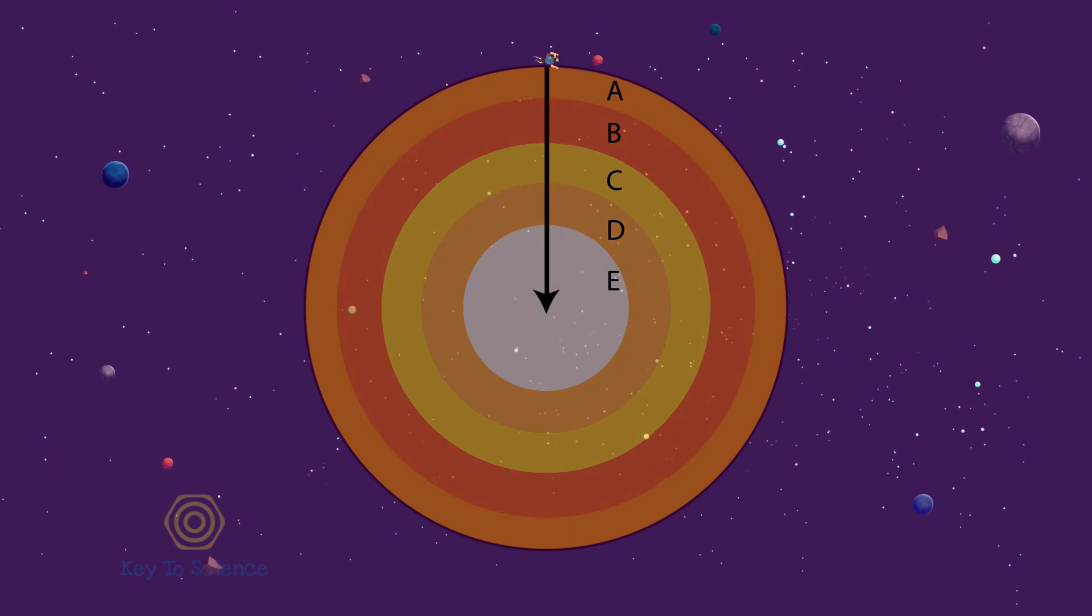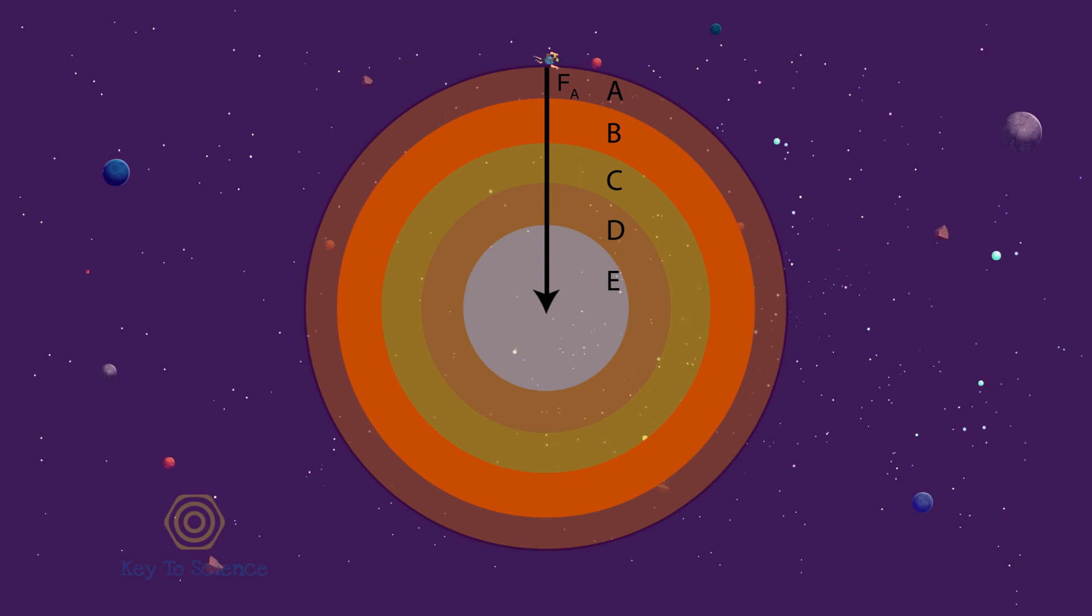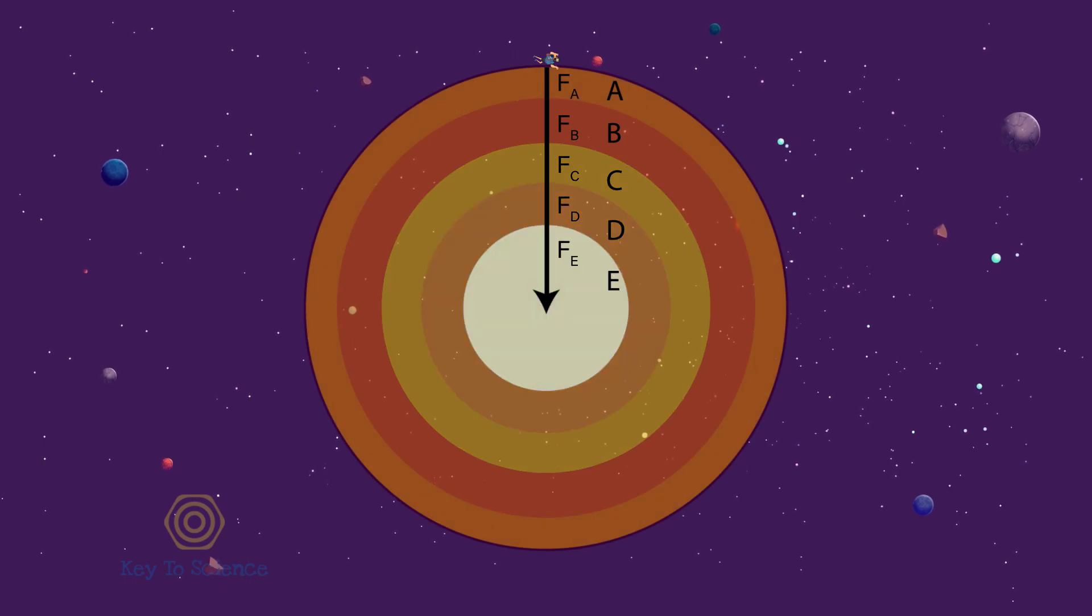Sphere A will be pulling us with a force, F-A. Sphere B will be pulling us with a force, F-B. The respective forces will be F-C, F-D, and F-E.